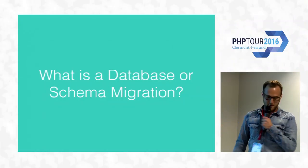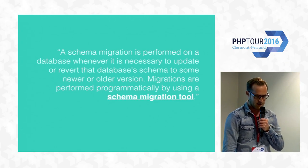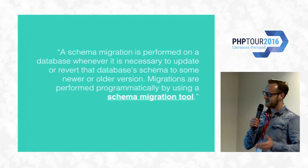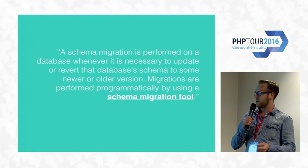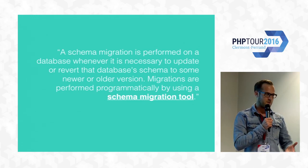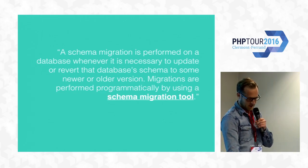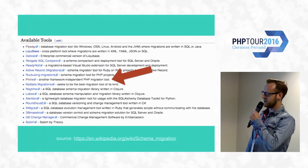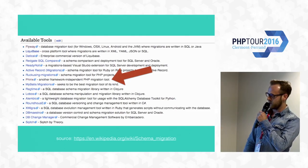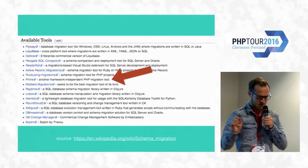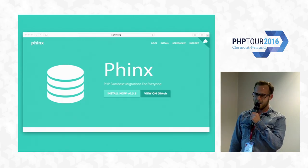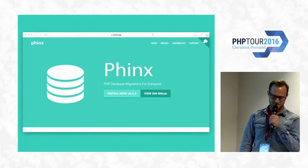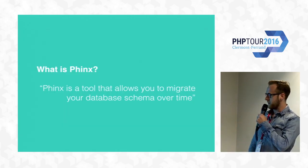So what is a database or schema migration? If I take it verbatim off the Wikipedia page, a schema migration is performed on a database whenever it is necessary to update or revert that database's schema to some newer or older version. Migrations are obviously performed programmatically using a schema migration tool. If we go to that Wikipedia page you can see a whole bunch of tools — some nice healthy competition — and somebody was kind enough to insert my tool right in the middle there. Let's click on that link and follow it, and you should be presented with this nice looking website, thinks.org.